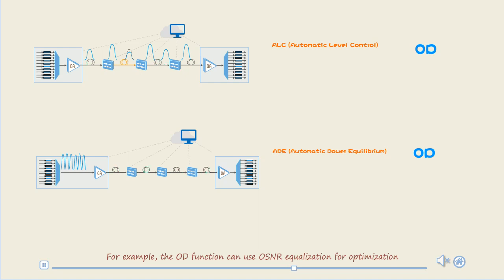For example, the OD function can use OSNR equalization for optimization based on optical power commissioning to achieve better commissioning effects. In addition, the OD function can resolve the deployment commissioning problems that APE cannot resolve.